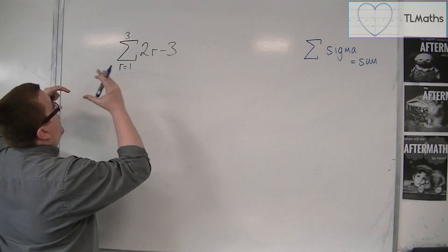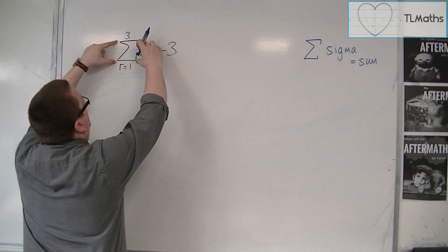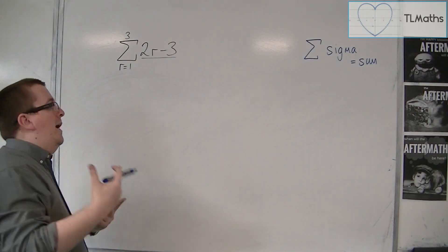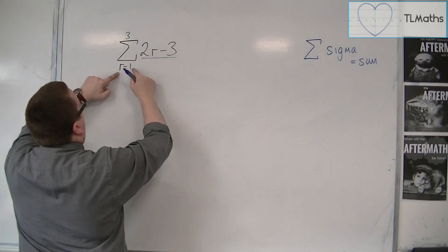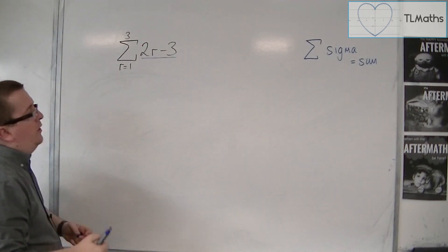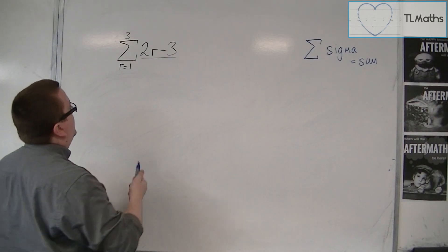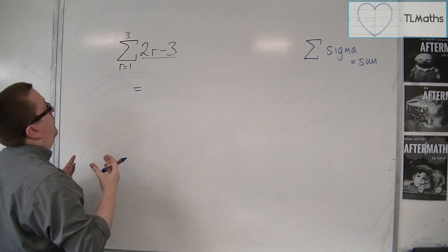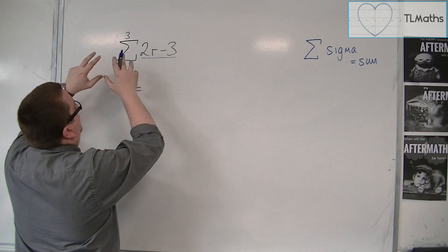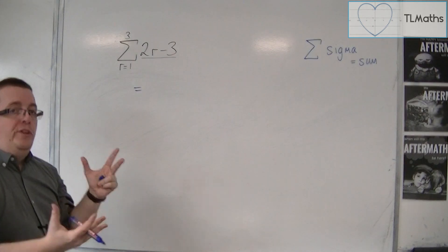So what this is telling me is I want to add up all of 2r minus 3 when r is 1 to 3. Let's take this step by step. What it is effectively saying is it wants me to substitute in r equals 1, 2, and then up to 3, and then add them all together.